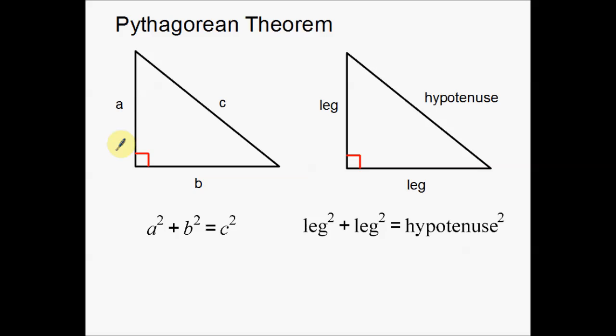Welcome back. Today we're going to talk about the Pythagorean Theorem. We're going to go through some basic examples of using the Pythagorean Theorem. The first example will be used to find the hypotenuse, and then the second example will be used to find the leg of a triangle.